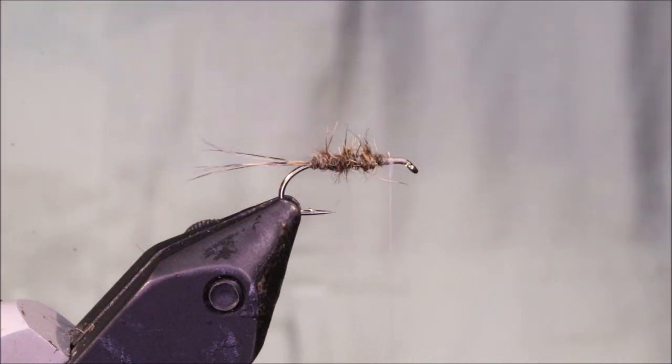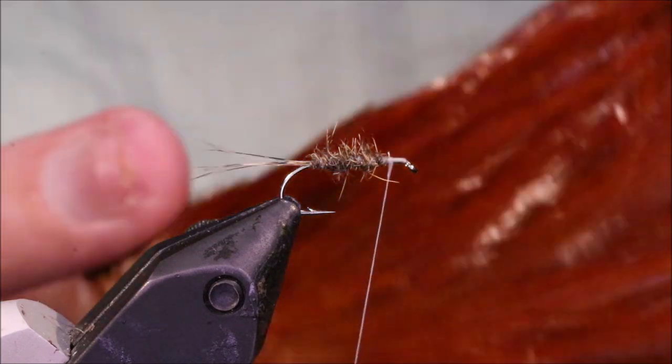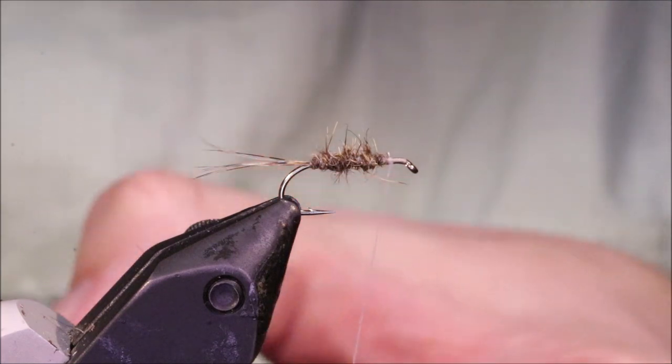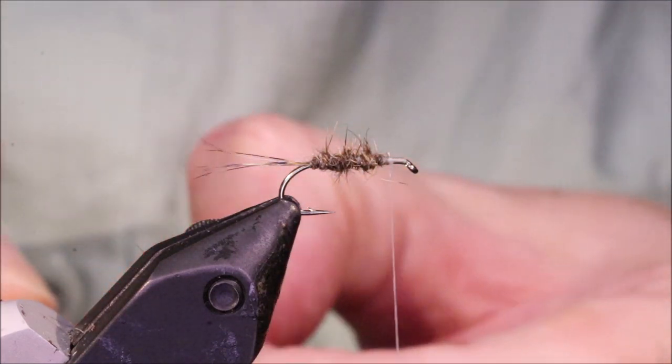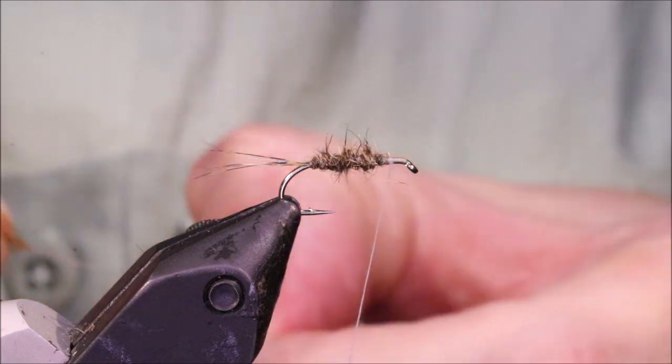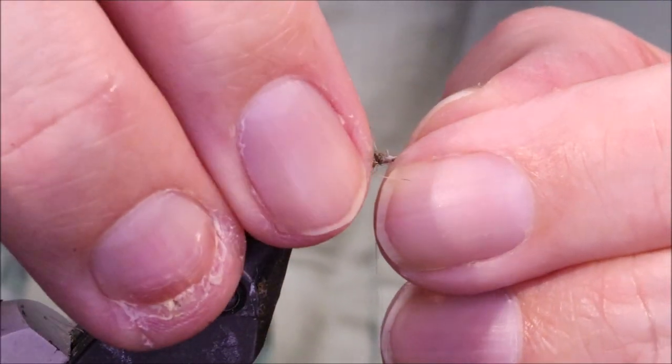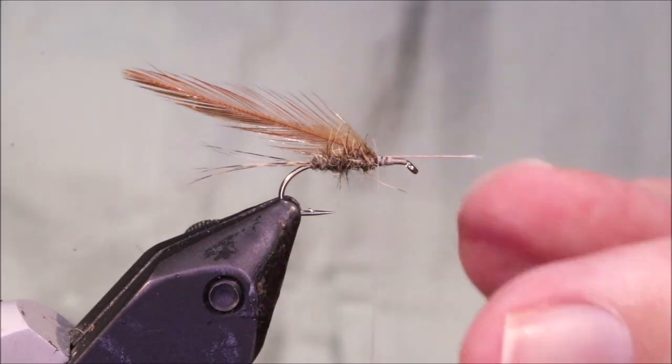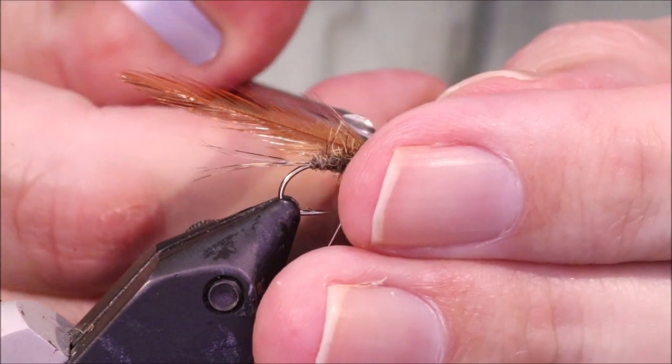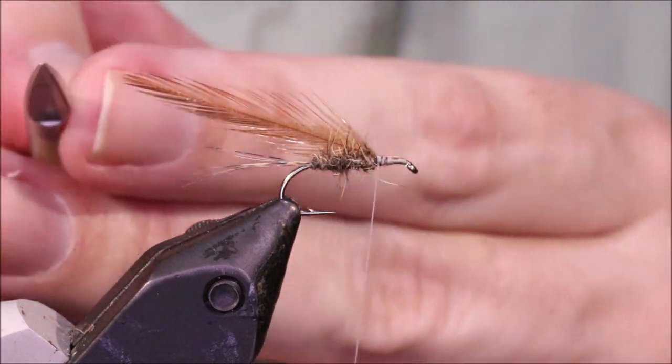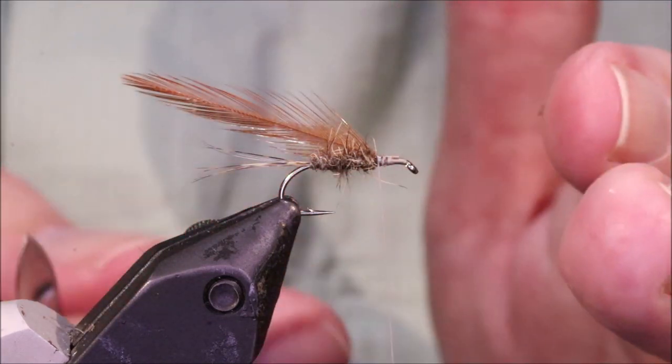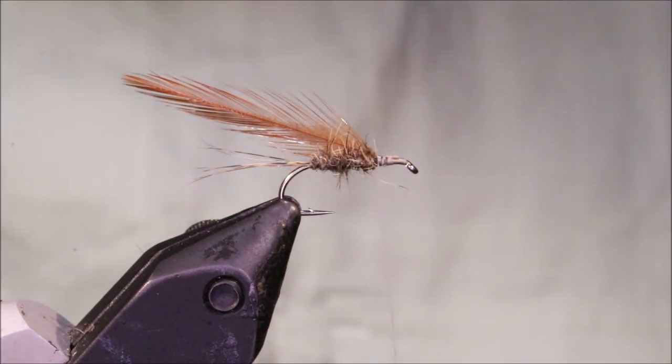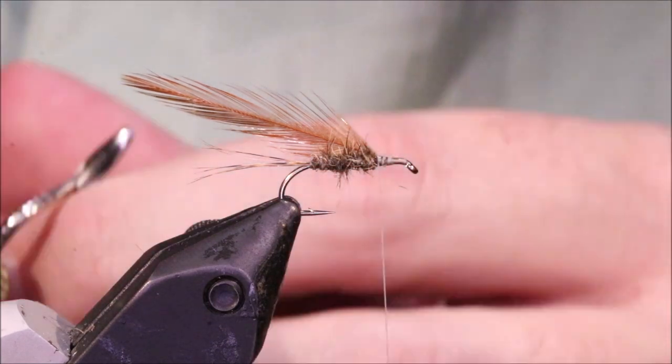Hackle comes from a cheap cape. It's a red game Chinese hackle. You don't want to be using high quality genetics for a Jingler. The fly does work better with cheap hackles. The cheap hackle, the feather barbs vary in length up the stem. So you get a sort of different effect, leggy effect, buggy effect. And it just lends itself to this pattern very well.